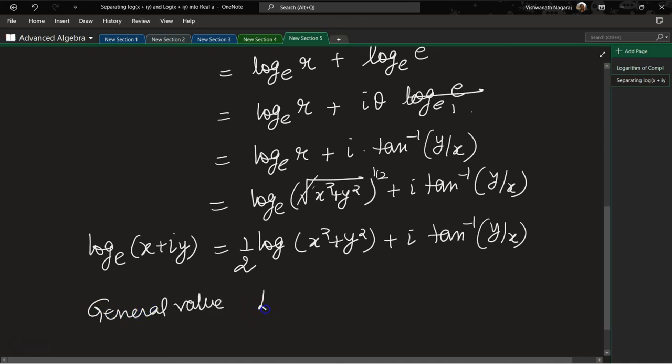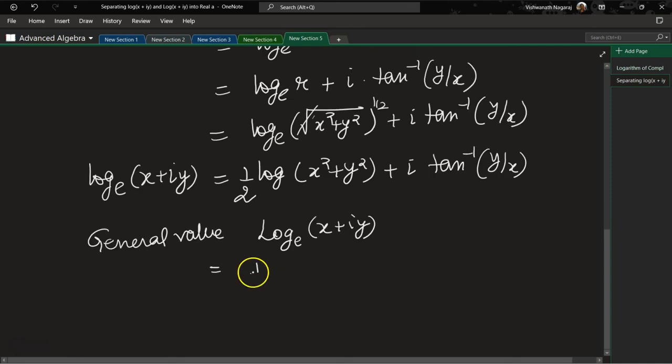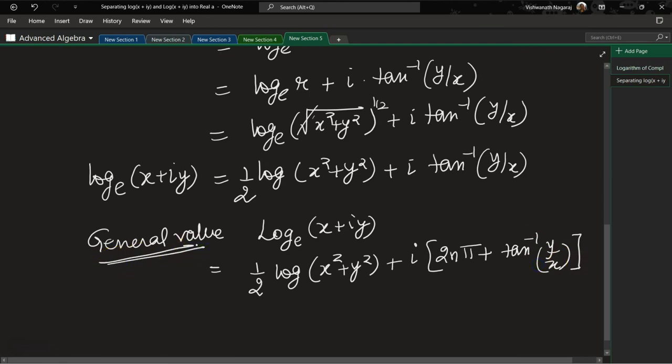The general value will be log_e(x + iy) = (1/2)log(x² + y²) + i(2nπ + tan⁻¹(y/x)).